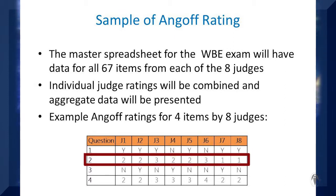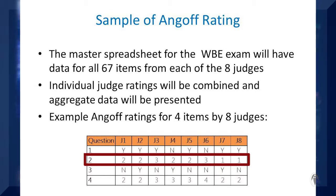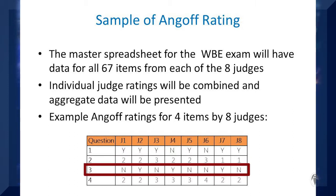Now look at question number two. This is not a yes-no type question — there are three sub-questions. The ANGOLF question asked of the judges was: how many of the three sub-questions will a Minimally Competent Student answer correctly? The answer ranges from zero to three. Judge number one felt that a Minimally Competent Student will answer two of the three sub-questions correctly, while judge three felt that a Minimally Competent Student will answer all three sub-questions correctly.